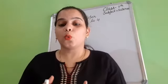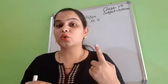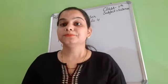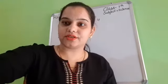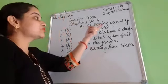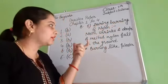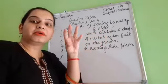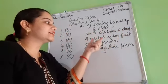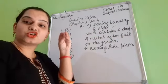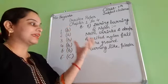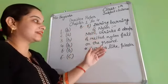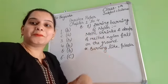Now B part — answer in one word or a few words. First question: give the burning characteristics of nylon. Nylon ki jo burning characteristics hoti hain kya hoti hain? During burning of nylon, it melts — voh pighal jaata hai, shrink ho jaata hai, bilkul sikud jaata hai, and drops of melted nylon fall on the ground. And it burns like plastic. These are the characteristics of nylon during burning. Okay?